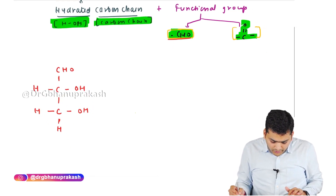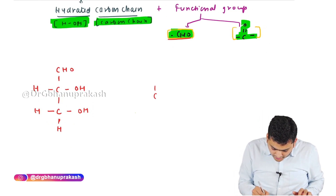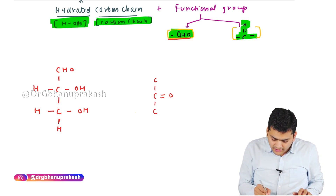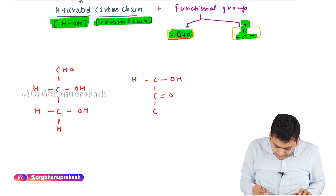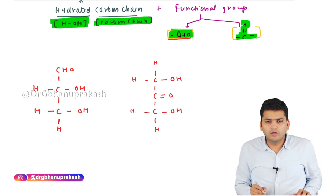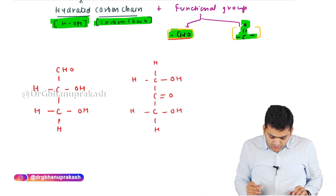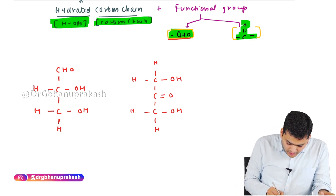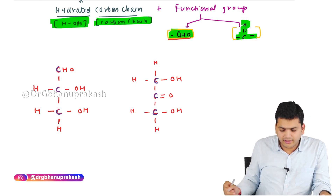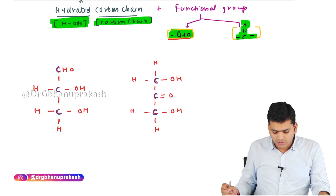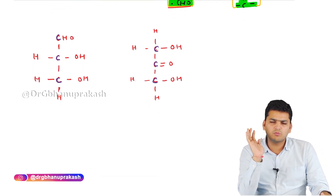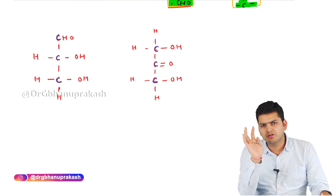Similarly, using the keto group: here is the keto group, the carbons, and the hydration. These are the smallest possible carbohydrates. If you count the carbons in each, there are three — one, two, three — so the smallest possible carbohydrate has three carbons.